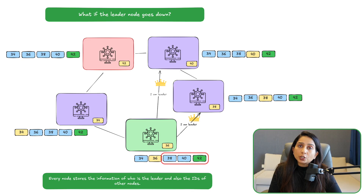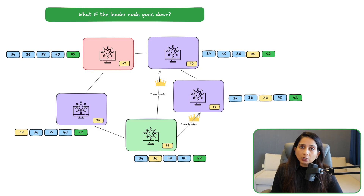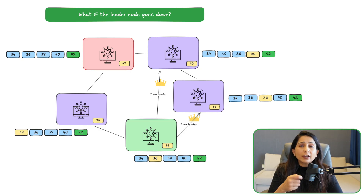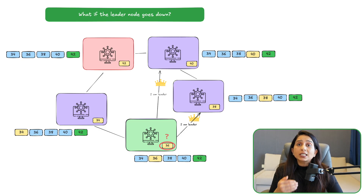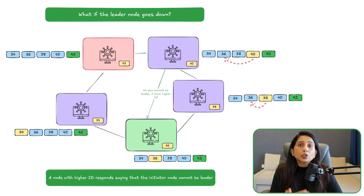In this case, nodes 38 and 40 have higher IDs, so node 36 sends election messages to them. Node 36 wouldn't send a message to node 42 because 42 was the leader that stopped sending heartbeats — though depending on the implementation it might message 42 assuming it could come back. Once nodes 38 and 40 receive the message from 36, they check: is the sender's ID lower than mine? Both 40 and 38 see that 36 has a lower ID, so both respond saying node 36 cannot be the leader.